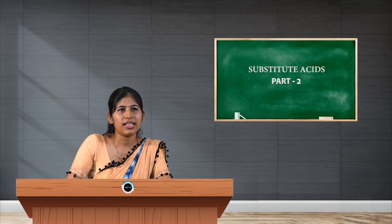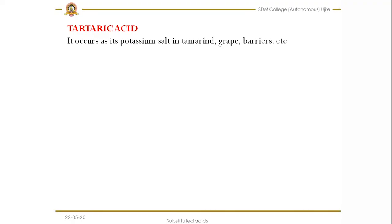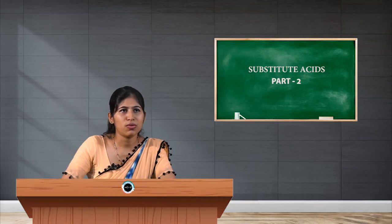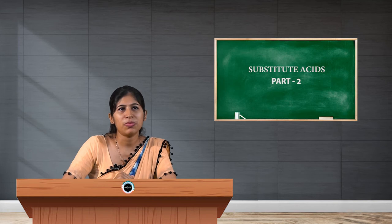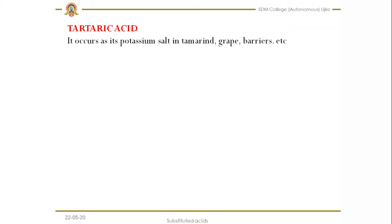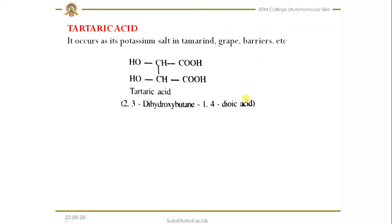That is about the chemical reactions of lactic acid. Let us see one more example: tartaric acid. You may have heard of this — it is a very common acid. It occurs as potassium salts in tamarind and is present in grapes, berries, etc. This is the structure of tartaric acid, also named 2,3-dihydroxybutane-1,4-dioic acid — that is the IUPAC name.